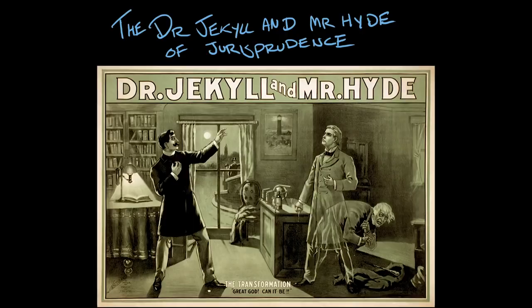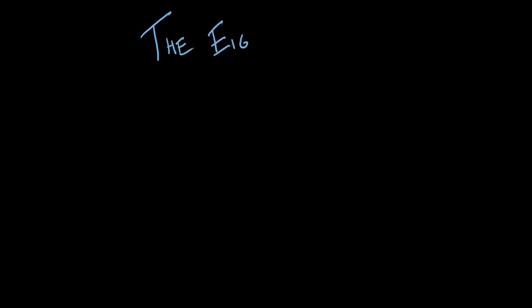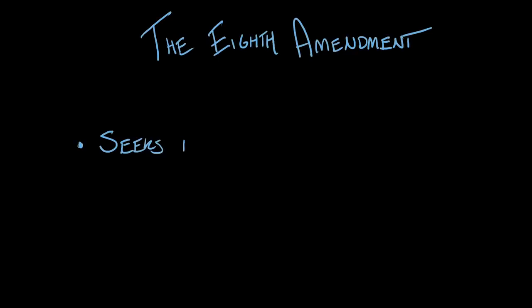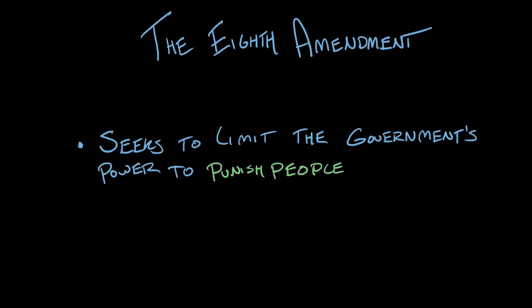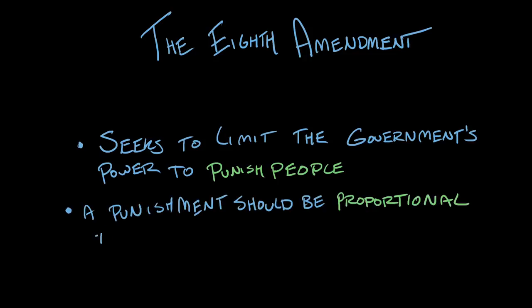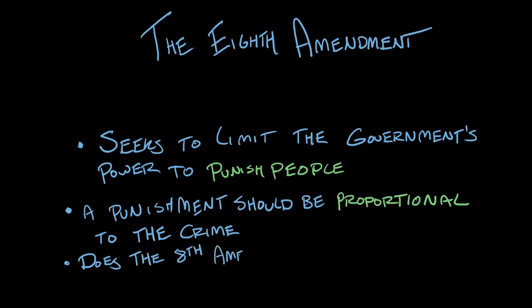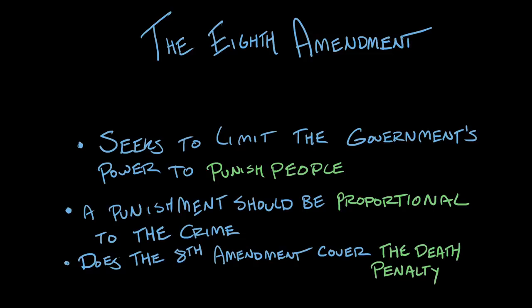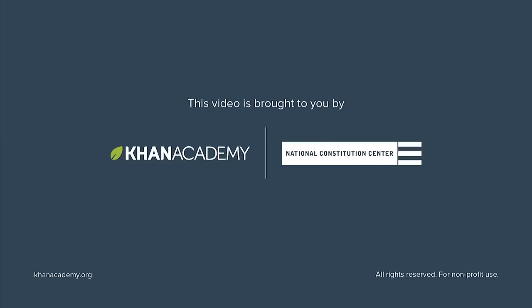So we've learned that the Eighth Amendment seeks to limit the power of the government in meting out punishment to people who have been accused or convicted of a crime. Although it's hard to tell exactly what constitutes excessive fines or bail, in general it's accepted that those punishments should be proportional to the crimes in question. Today, one of the biggest debates concerns whether, or how, the Eighth Amendment may limit the death penalty. To learn more about the Eighth Amendment, visit the National Constitution Center's Interactive Constitution and Khan Academy's resources on U.S. government and politics.